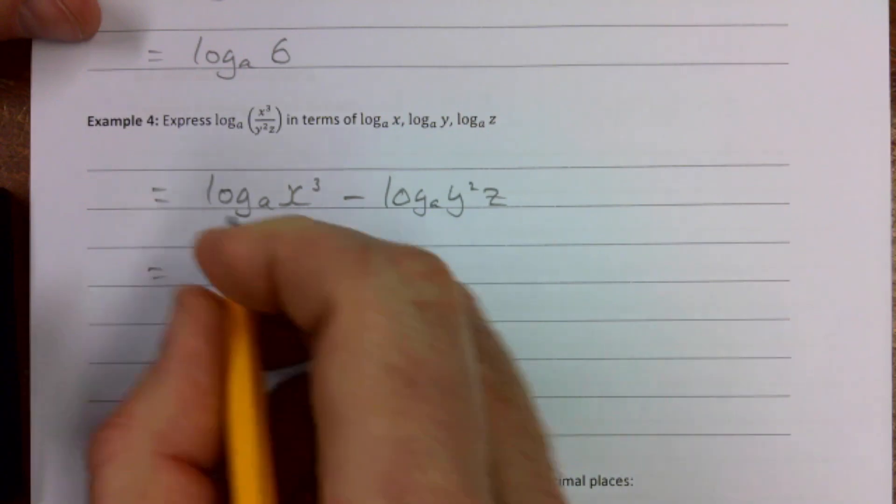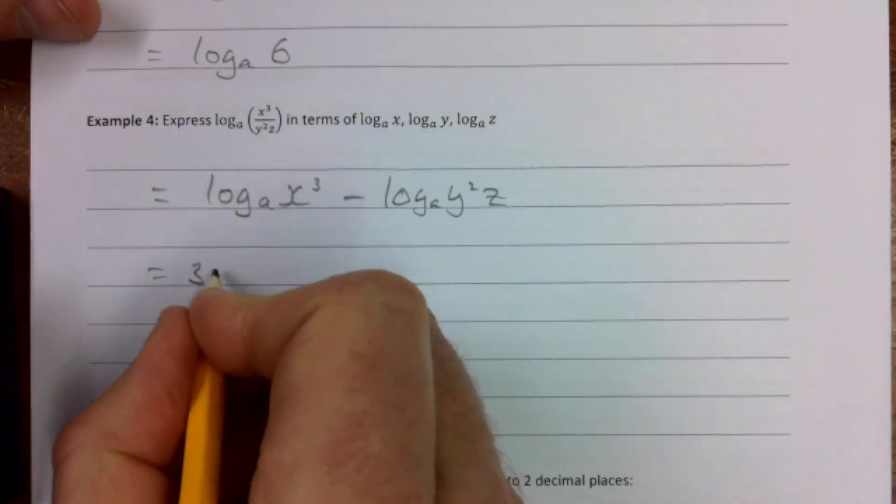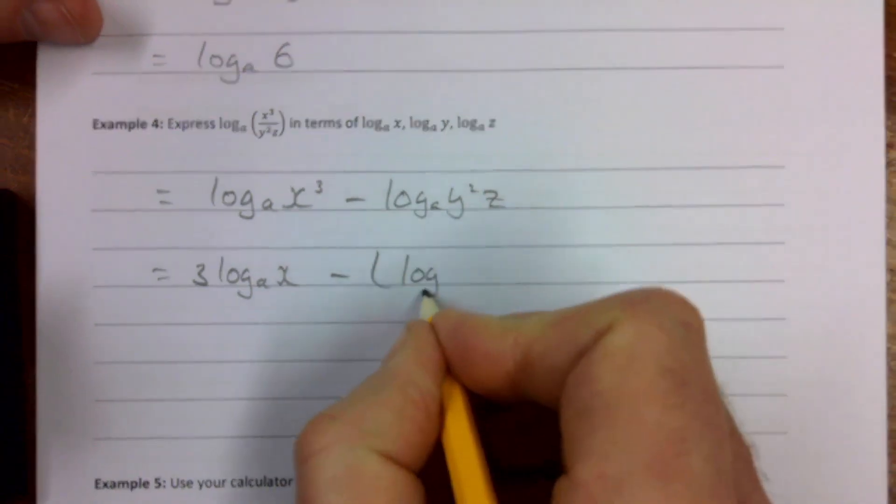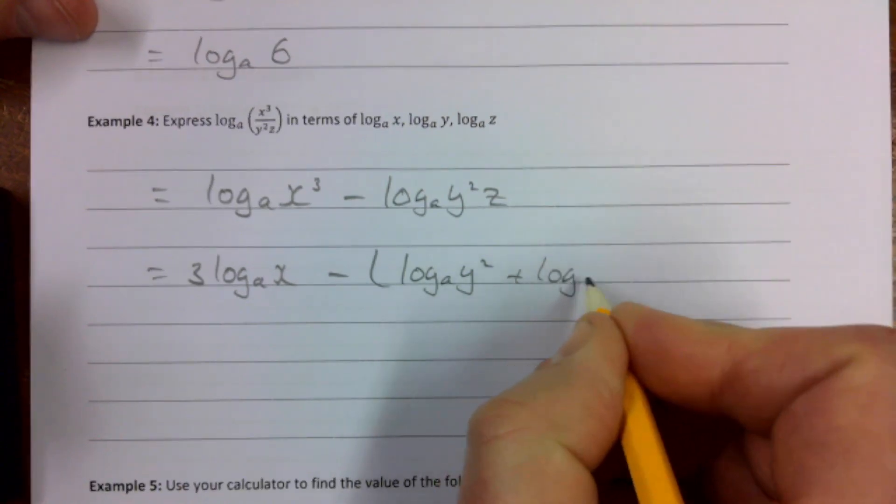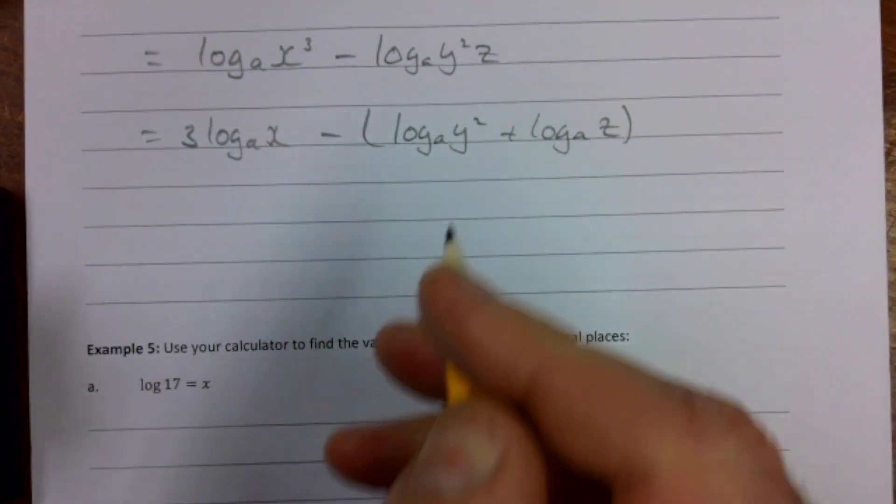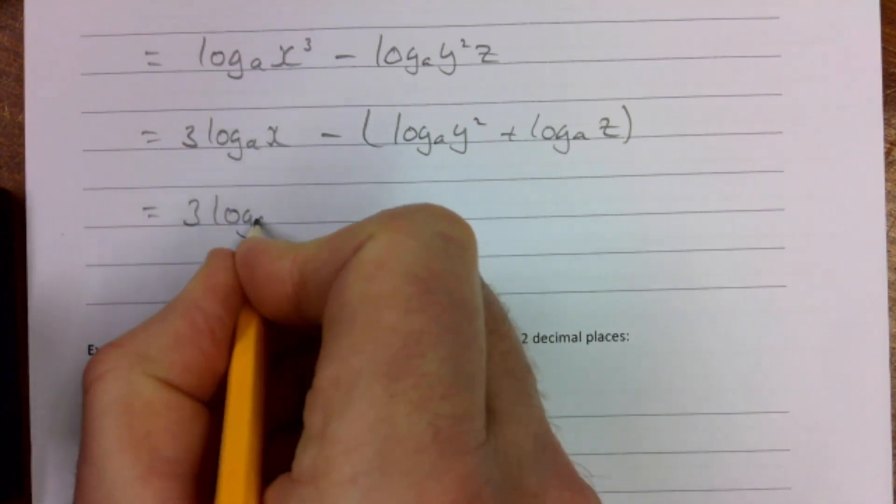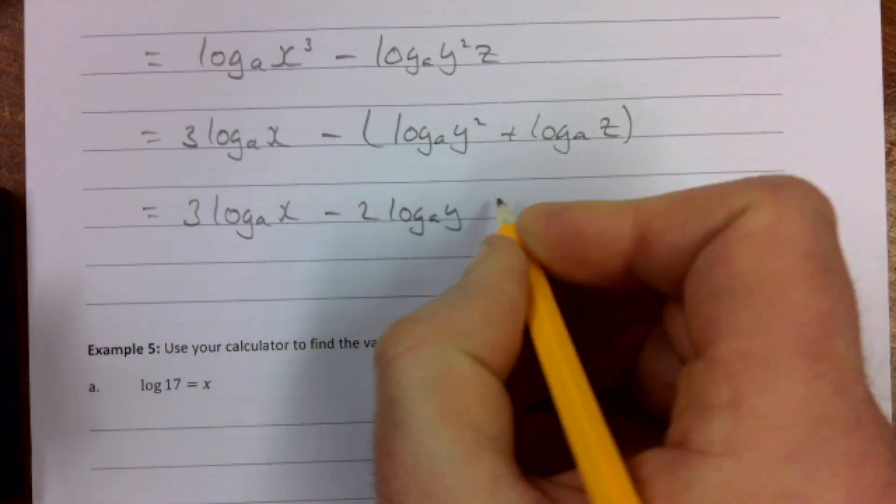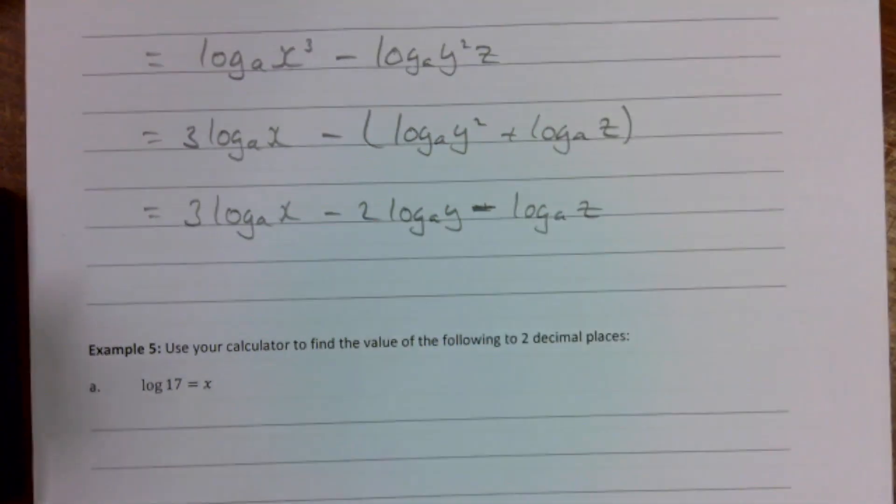I can bring a 3 to the front, and I can separate out my y squared and the z using the first law of logs. This is the third law of logs here. Log to base a of x minus, and just be careful with this wee minus, but we have log to base a of y squared plus log to base a of z. And then finally I'm going to bring that 2 to the front and effectively multiply by minus. So it's 3 log to base a of x minus 2 log to base a of y minus log to base a of z.